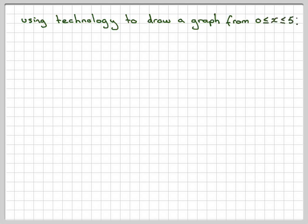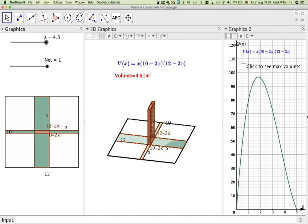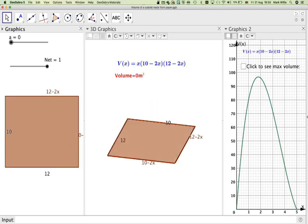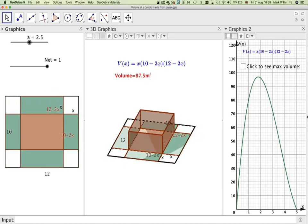Using technology to draw a graph, and these graphs I draw through using GeoGebra. Now, I only need to draw the graph between 0 and 5, because if we go back to the GeoGebra app, if I make a 5, I don't really get a box. You can see I don't really get a box. I don't need to make it 5, and obviously it's not going to be less than 0, because it's just going to be the same size piece of paper.